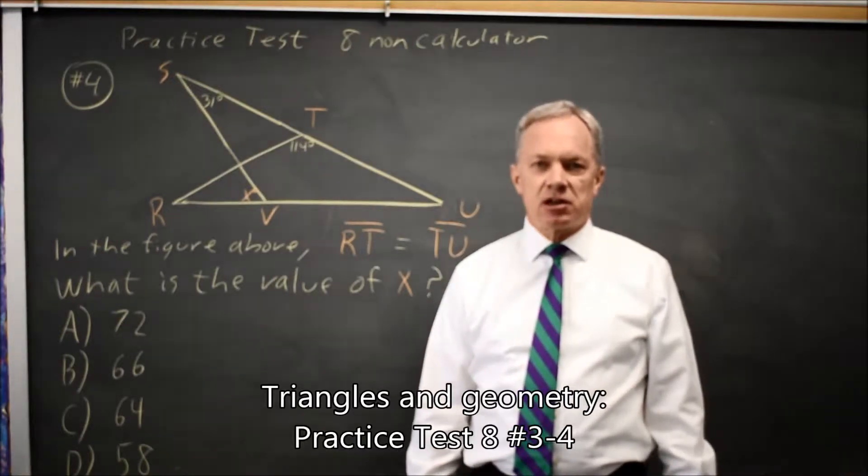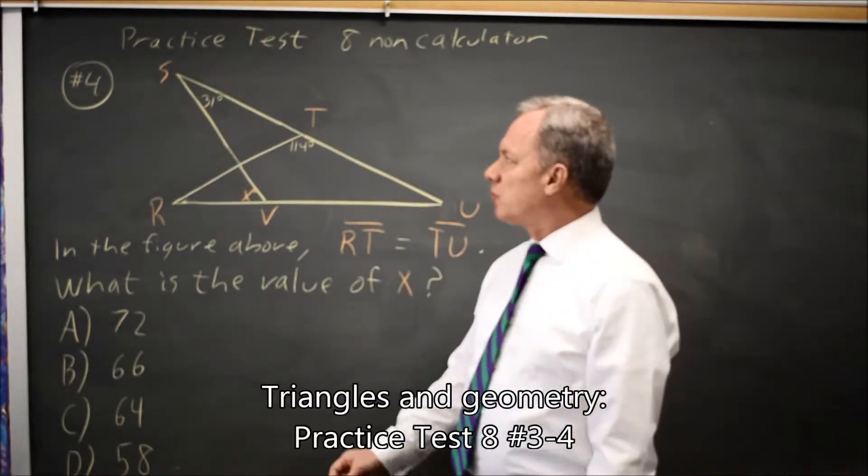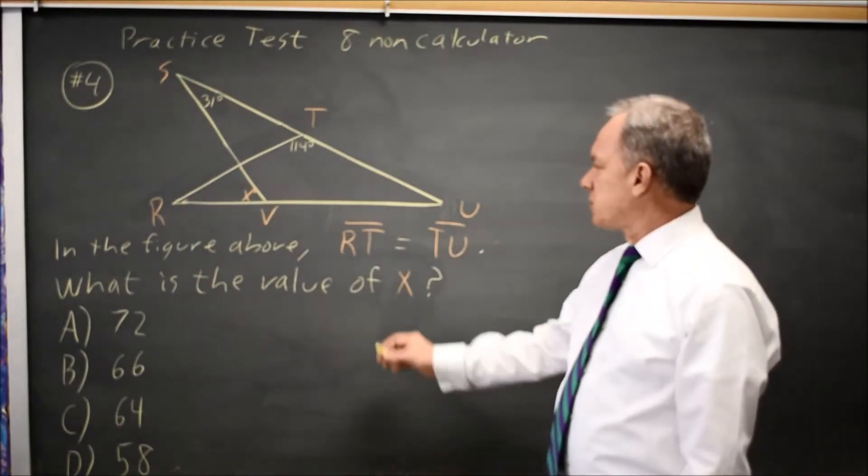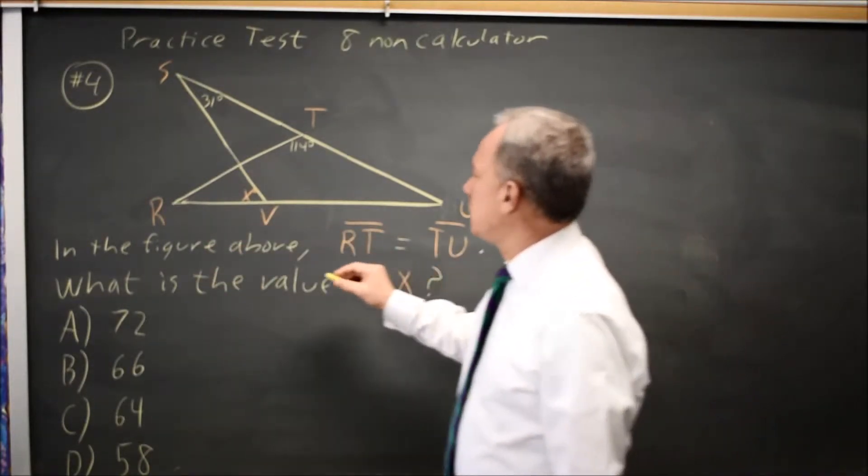This is SAT test eight, non-calculator question number four. College Board gives us a diagram with some triangles and tells us that RT equals TU.